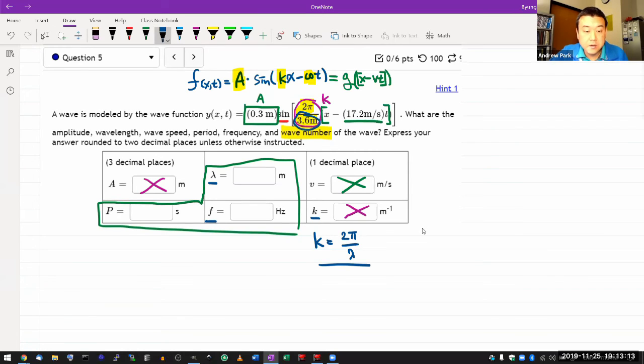Frequency, there's a relationship that relates frequency, wavelength, and wave speed together. And the small secret, the way I memorize this relationship is by unit.